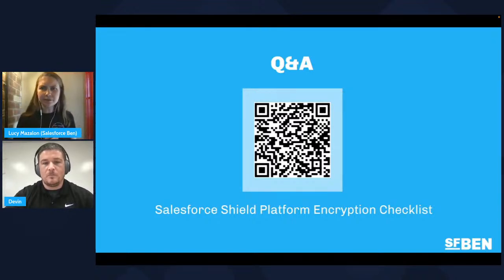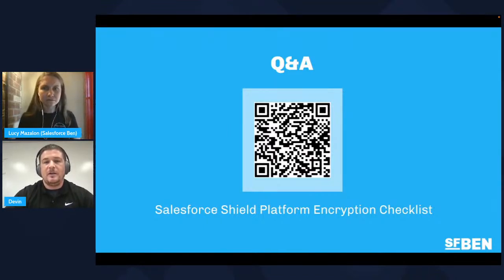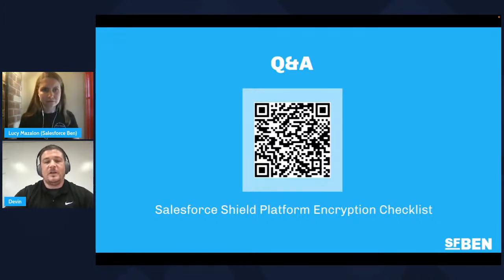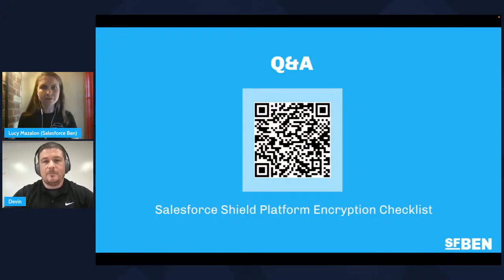What does it mean that data is encrypted at rest? It means it's encrypted in the Salesforce data center — application layer encryption with Shield, encrypted at the field level. When the data is stored, it is in an encrypted state at that point. Salesforce database agents working there wouldn't be able to see the data going through because it is encrypted while it's stored at rest.